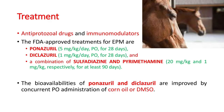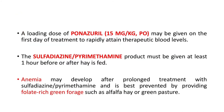Now let's see the treatment of EPM. Antiprotozoal drugs and immunomodulators are the most important part of treatment. The FDA-approved treatments for EPM are ponazuril, diclazuril, and a combination of sulfadiazine and pyrimethamine. The bioavailabilities of ponazuril and diclazuril are improved by concurrent peroral administration of corn oil or DMSO. A loading dose of ponazuril at 15 mg/kg per oral may be given on the first day to rapidly attain therapeutic blood levels. The sulfadiazine-pyrimethamine product must be given at least one hour before or after hay is fed.